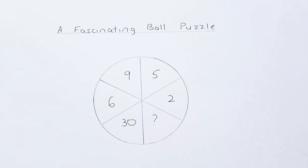Find the missing number that is occupied by the question mark. The numbers in the ball are as follows: 2, 5, 9, 6, 30 and the question mark. What will be the number that represents the question mark?